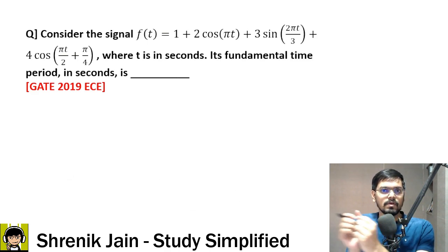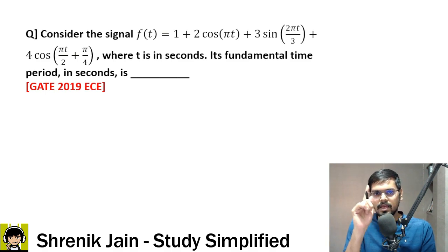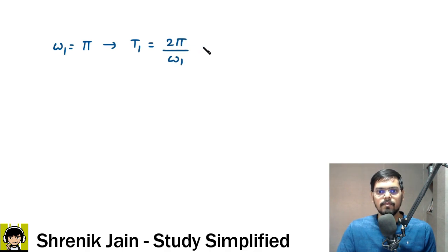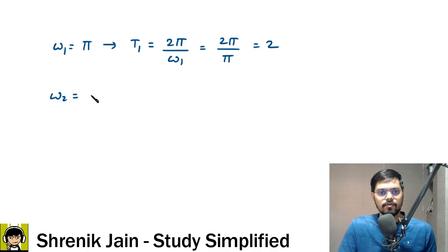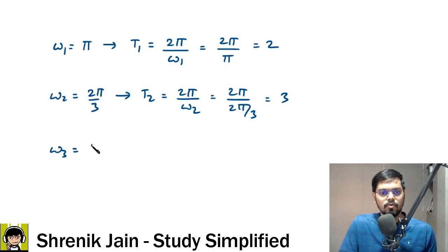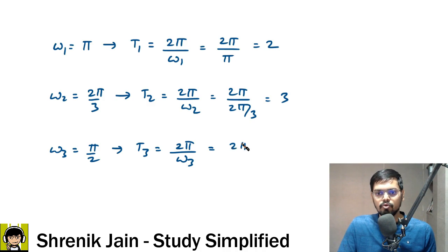Save time on this easy question and invest it in harder ones. Now T1 = 2π/ω1 = 2π/π = 2. ω2 = 2π/3, so T2 = 2π/(2π/3) = 3. ω3 = π/2, so T3 = 2π/(π/2) = 4.